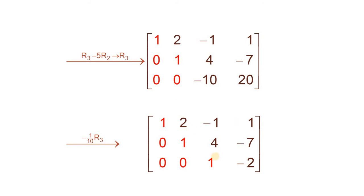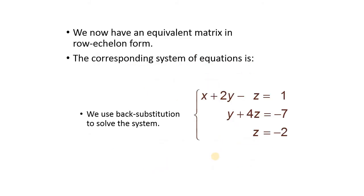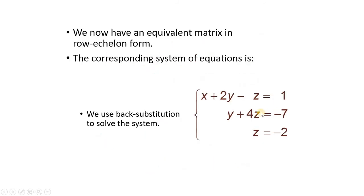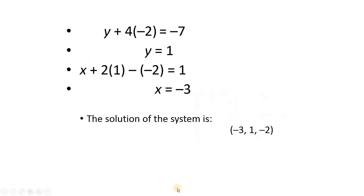From the row echelon form we can write: z is equal to minus 2; y plus 4z is equal to minus 7; x plus 2y minus z is equal to 1. We use back substitution to solve the system. Substituting z into the second equation gives the value of y, and substituting y and z into the first equation gives the value of x.